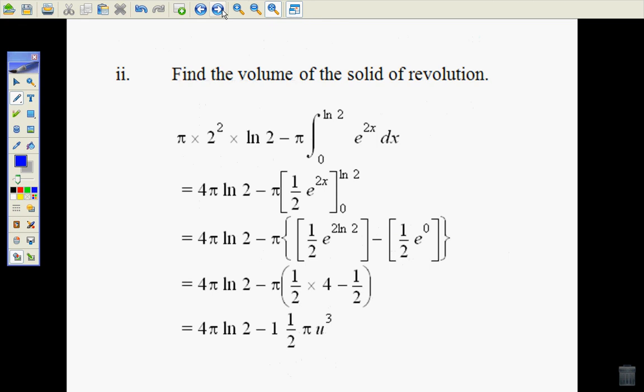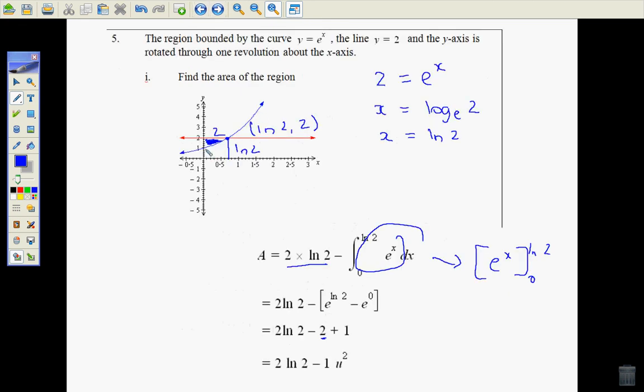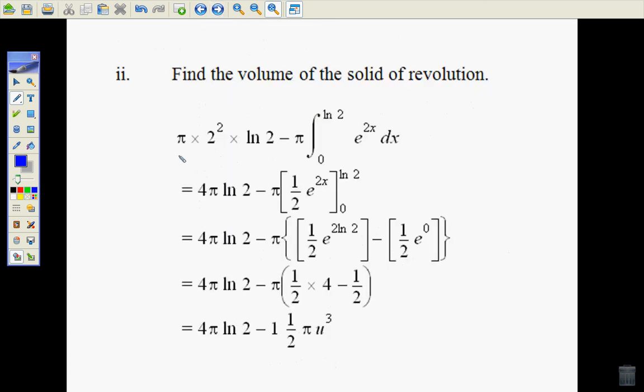For the volume, I'm going to get a cylinder minus this shape here. So I want to get the cylinder and then take away that volume there and that would leave me the outside volume. So we found the volume of the cylinder which is pi times the radius squared times the height which is natural log of 2.